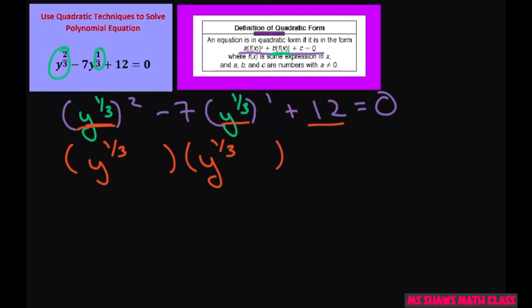Now we have a 12 so this will be minus 3 minus 4 equals 0. Now set each piece equal to 0.